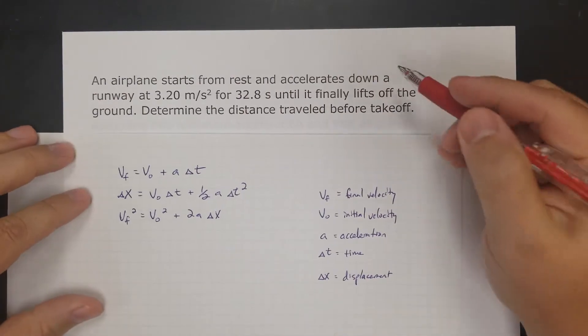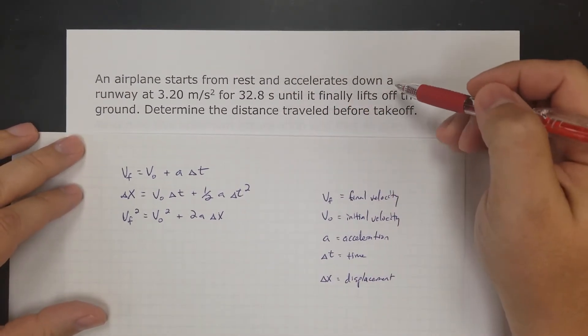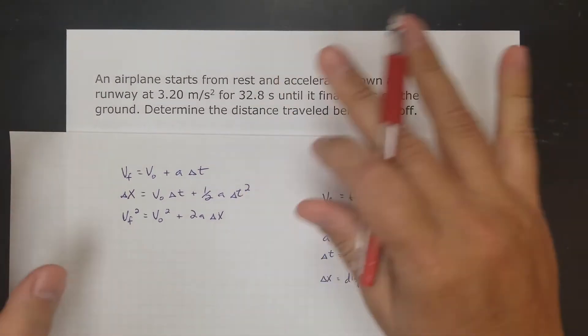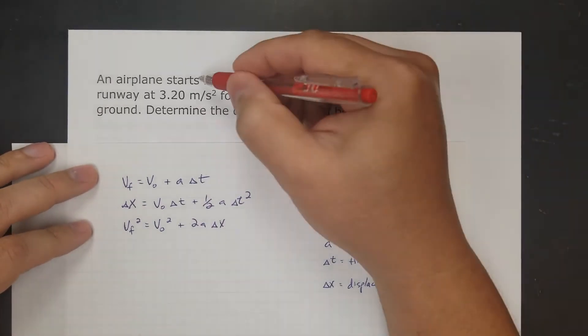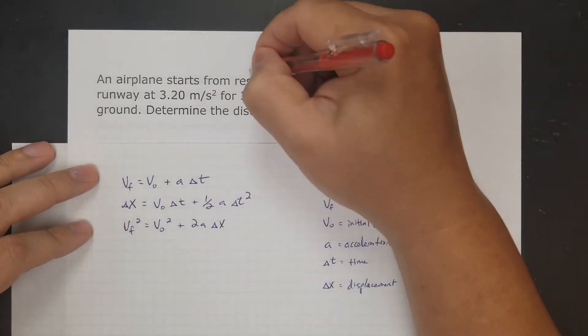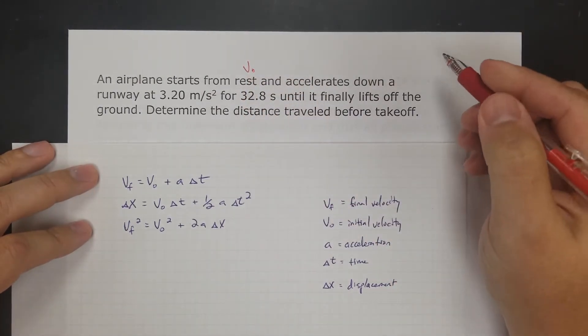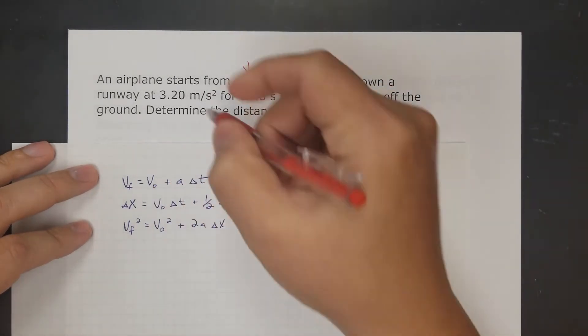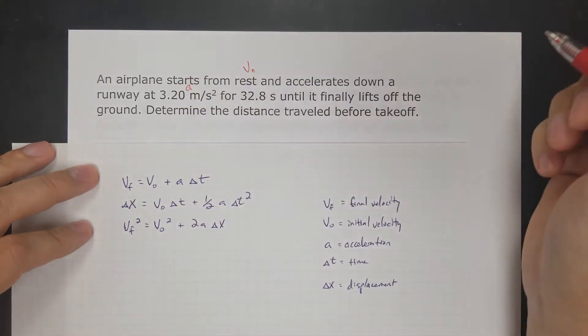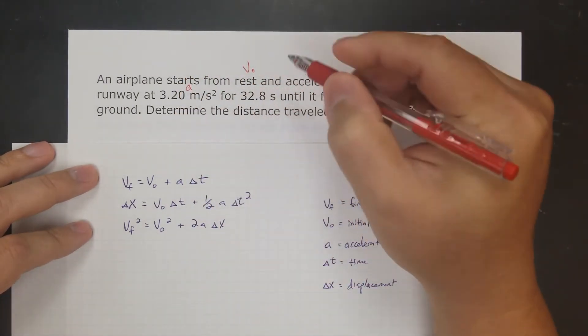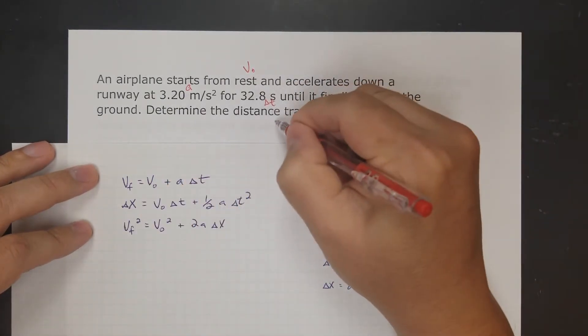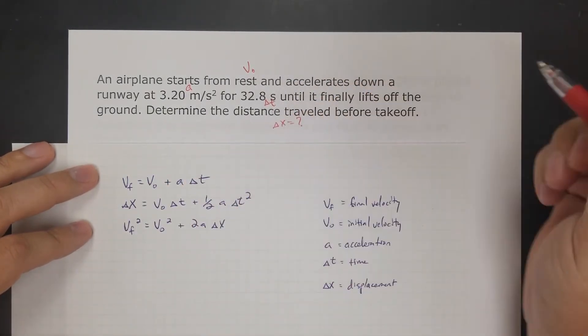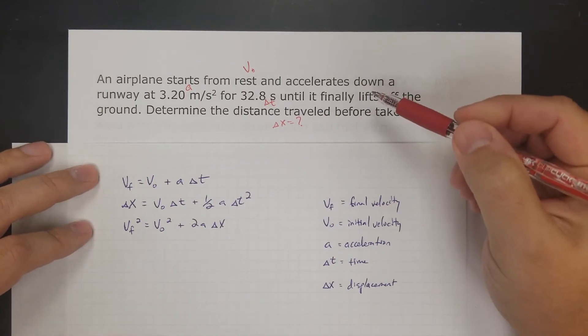Here's my next problem: An airplane starts from rest and accelerates down a runway at 3.2 meters per second squared for 32.8 seconds. Same thing - before I start trying to pull equations out, let me figure out what I have. Starts from rest, so this tells you the initial velocity, even though it's not a number. Accelerates down the runway, so that's my acceleration. 32.8 seconds is time, so that's my time interval. Determine the distance traveled, so that's delta x. I need to figure out delta x.